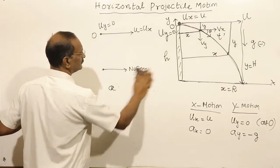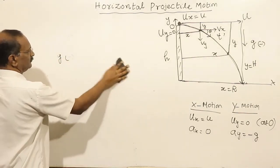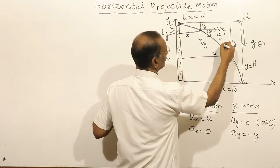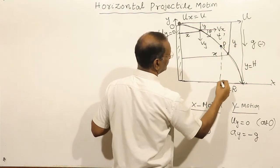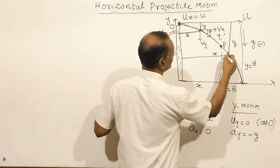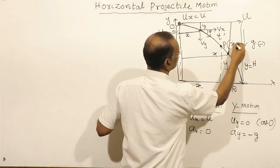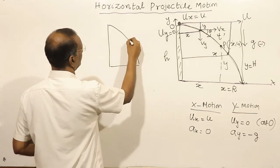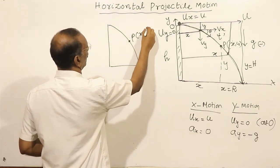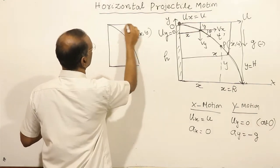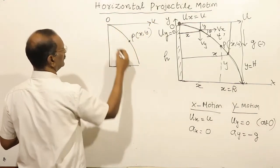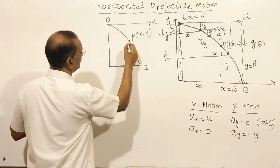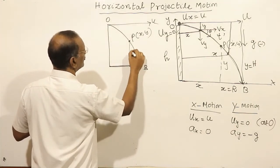Displacement of the particle at any general point P: it travels a distance x in the horizontal direction and a distance y in the vertical direction. Using the equation S = ut + ½at², for motion in x-direction: S is equal to x, initial velocity is u, acceleration in x-direction is 0, and time is t.